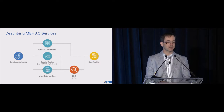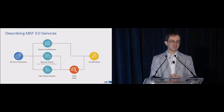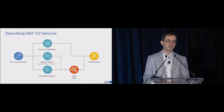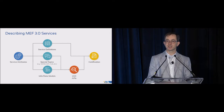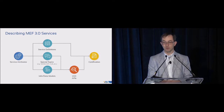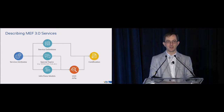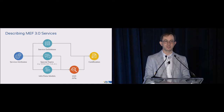Some topics need more in-depth investigation — things like service OAM, service activation testing, control protocols at various layers, multiple classes of service, and bandwidth profiles. We tend to have a series of documents on those more in-depth topics. We then use the service attributes and service definitions to create information models and data models, which feed into the APIs. Ultimately, the service definitions and APIs feed into the certification program.